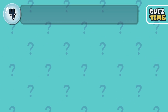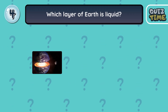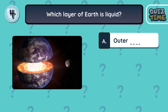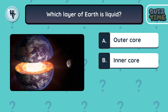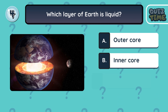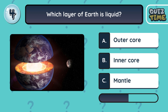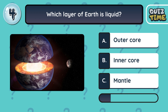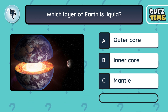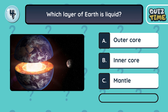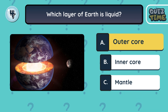Number 4. Which layer of Earth is liquid? A. Outer core. B. Inner core. C. Mantle. The correct answer is A. Outer core.